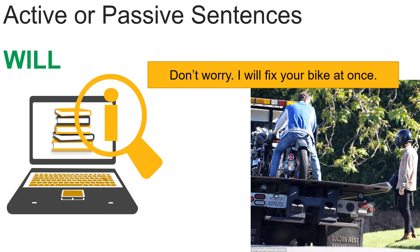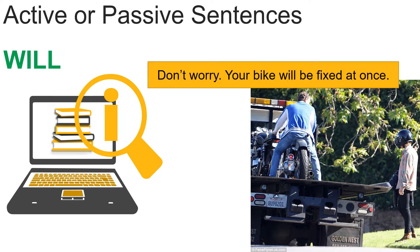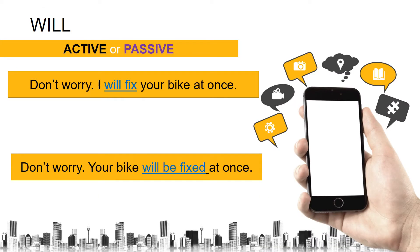So the man says: 'Don't worry, I will fix your bike at once.' Now let's take a look at another example. The second sentence is different: 'Don't worry, your bike will be fixed at once.' We have two different constructions. The first sentence is: 'Don't worry, I will fix your bike at once,' while the second is: 'Don't worry, your bike will be fixed at once.' The question is: which one is the active sentence?